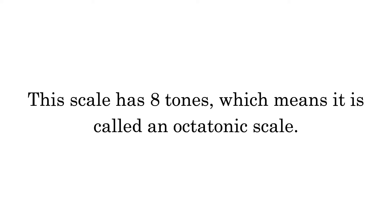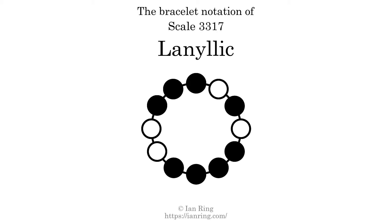This scale has 8 tones, which means it is called an octatonic scale. This is a bracelet notation diagram of scale 3317. The shaded circles represent tones that appear in the scale, and they are read clockwise, starting at the top.